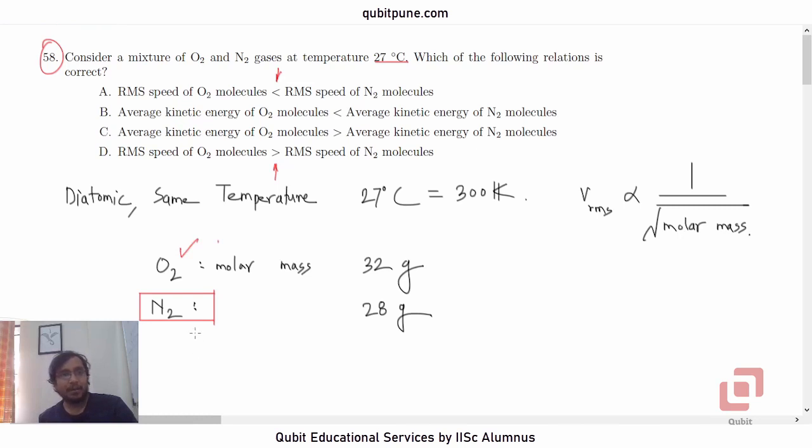Which option will be right? Nitrogen molecules will have greater RMS speed because they have lower molar mass. So RMS speed of oxygen molecules will be less than RMS speed of nitrogen molecules. Hence, it is option A.